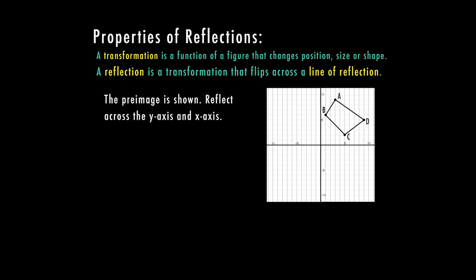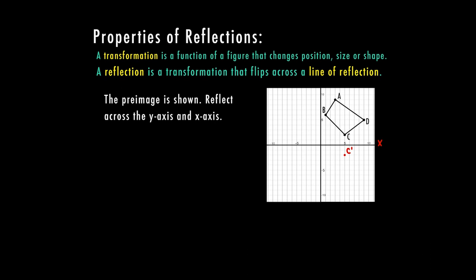Let's reflect this across the x-axis first. In order to reflect something over a line, we want to find our line of reflection — in this case it's the x-axis — and put each point on the opposite side. Starting with point C, which is closest to the x-axis: I count down two to the x, then go two more to the other side, and there is my C image.